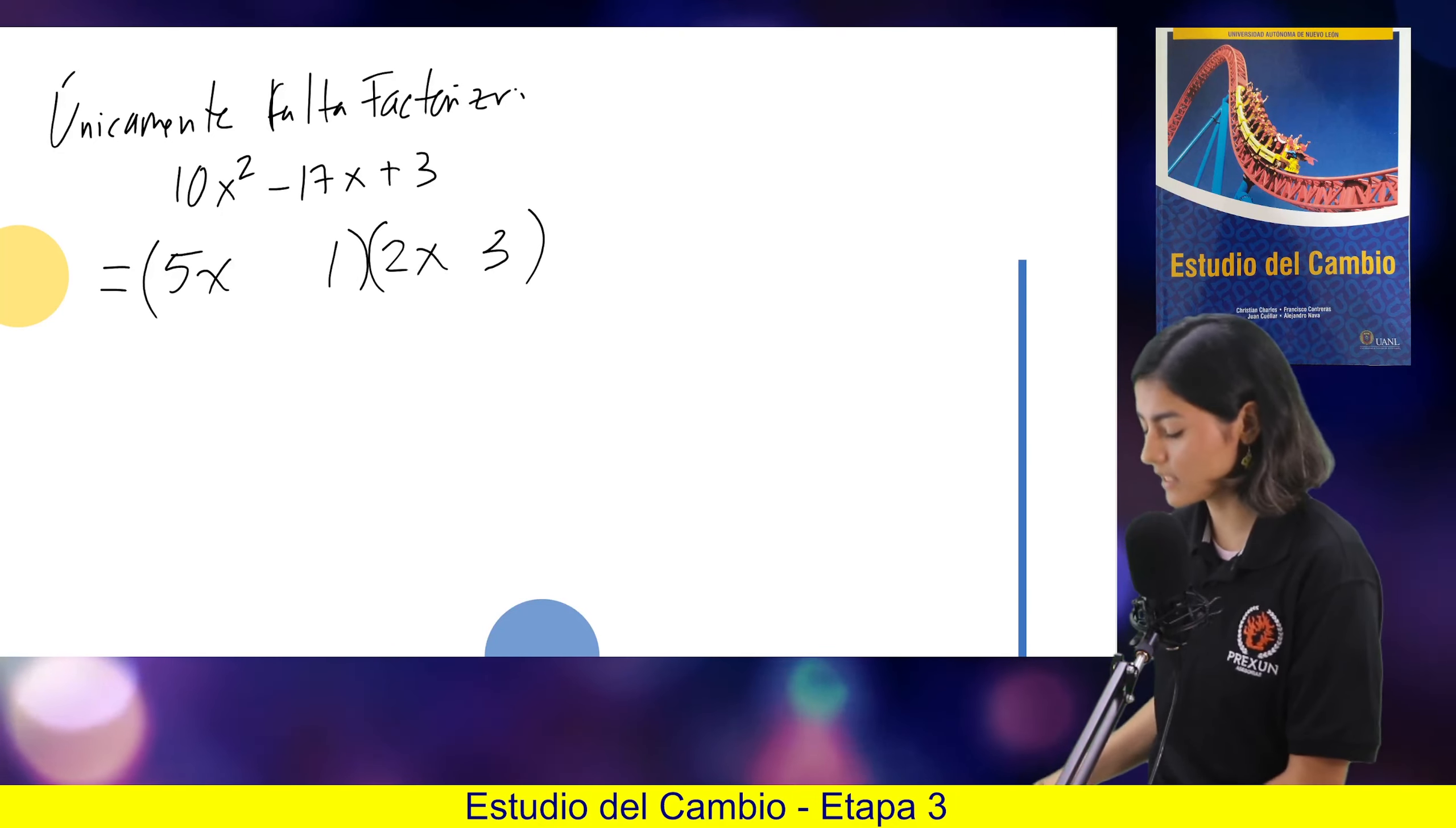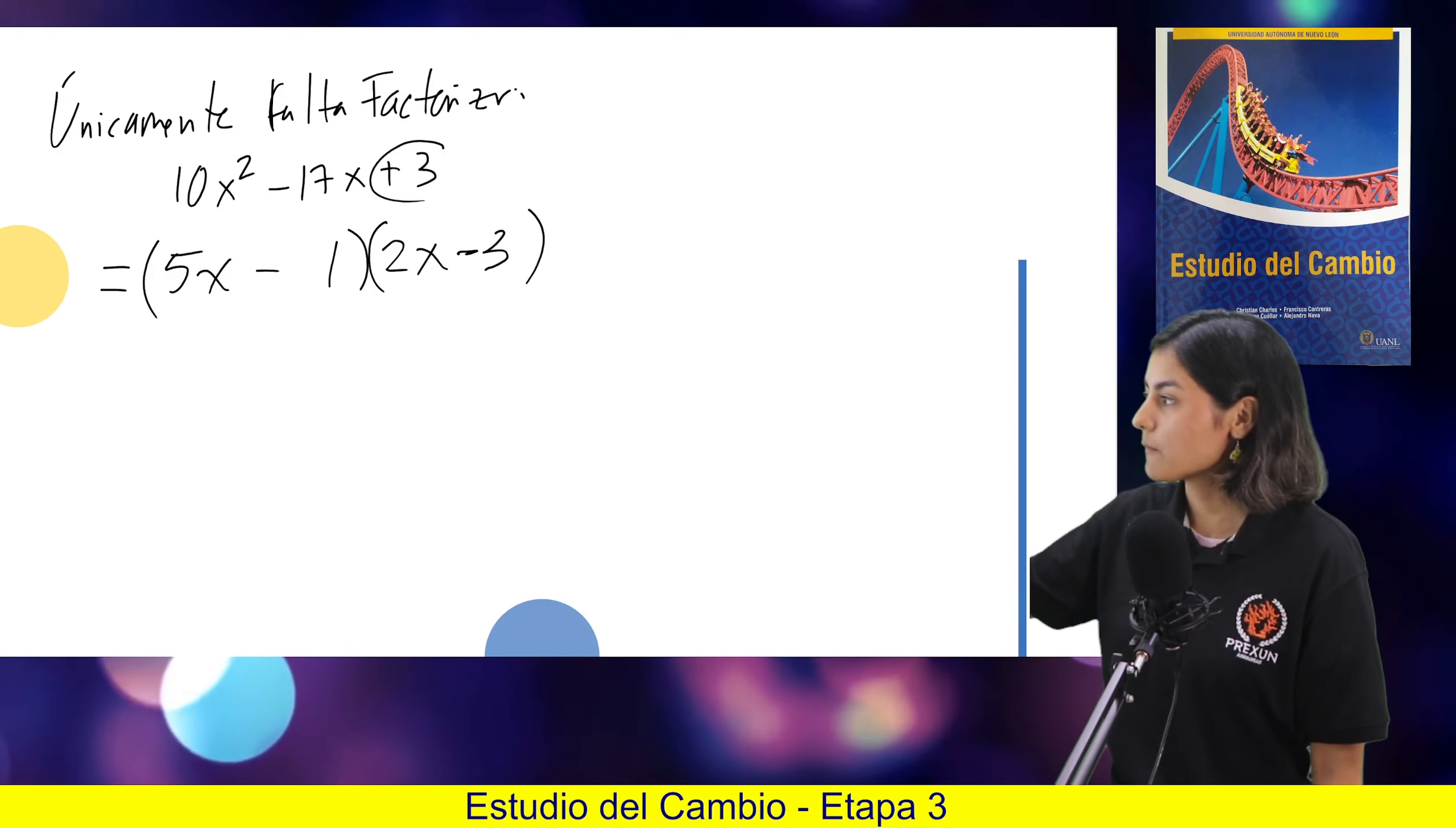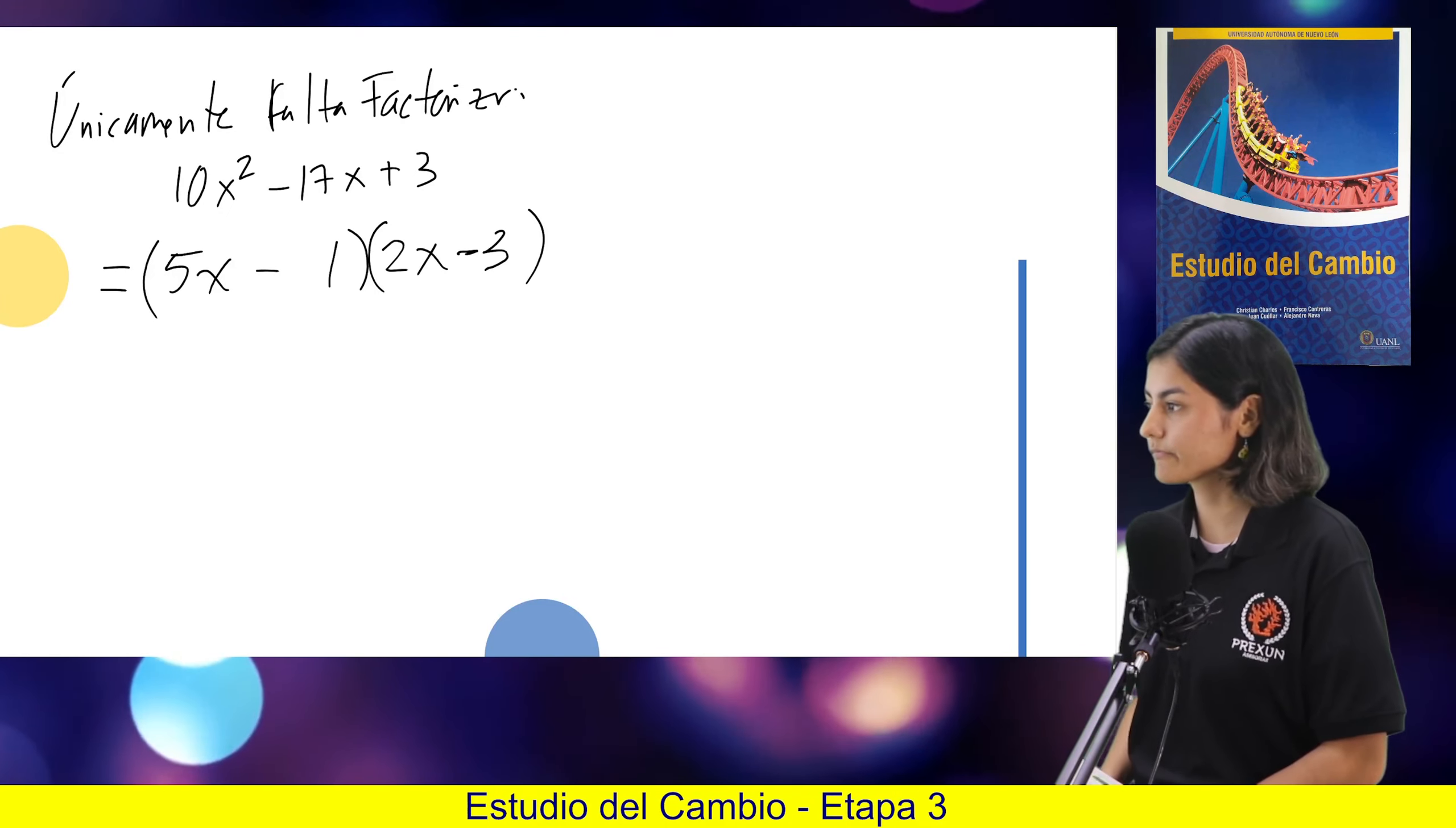En este caso la factorización quedaría como 5x menos 1, y aquí sería un menos también para que al multiplicar sea un más. Entonces, realmente en este tipo de factorización me debo de preocupar por este, y ya a la hora de saber si nos da este o no, porque puede que cambien de lugares, pues tendríamos que checar que ya al sumarse con el 5x o con el 2x nos da el menos 17x.